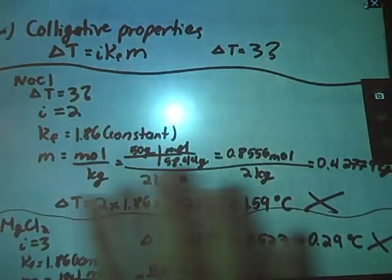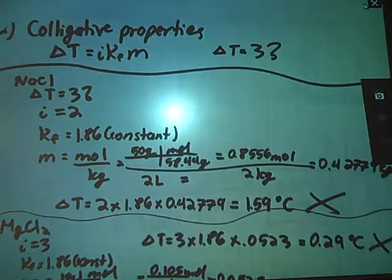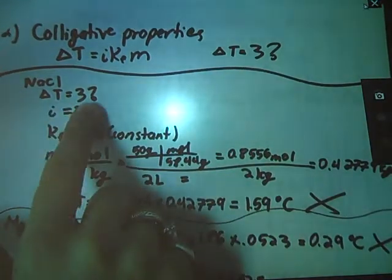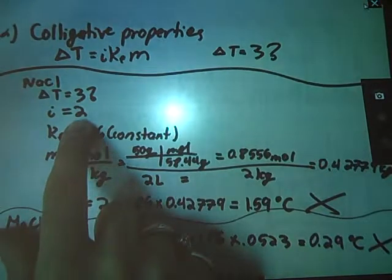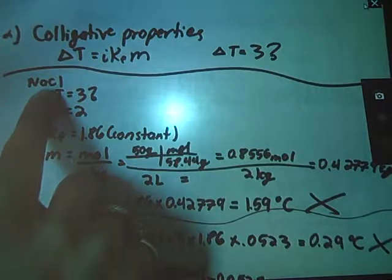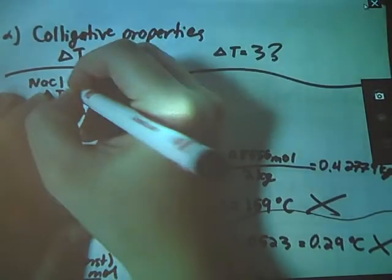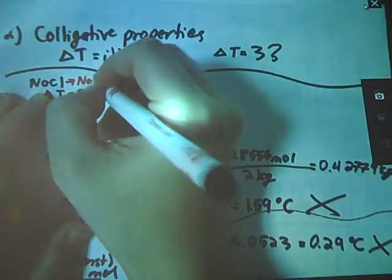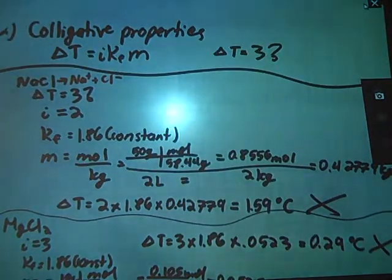So the first setup that I did here was with that 50 grams of sodium chloride. So I want to know, does my change in temperature equal 3 degrees? My Hoff factor is 2, because this is an ionic solid. When I dissolve it in water, I will end up with Na and Cl. So that's a Hoff factor of 2, 2 ions.